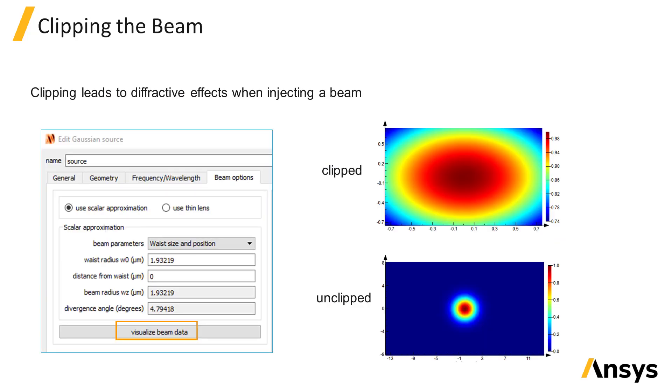When injecting a beam, one thing to be careful of is avoiding clipping the beam at the edges, since this can lead to diffractive effects. You should always use the Visualize Beam Data button to plot the field profile and make sure that the field amplitude of the beam decays to zero by the edges of the source region.